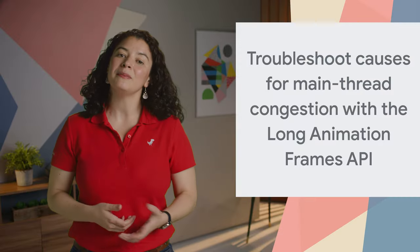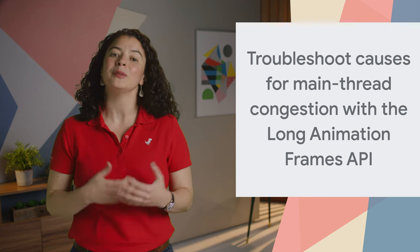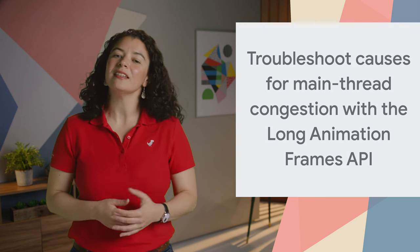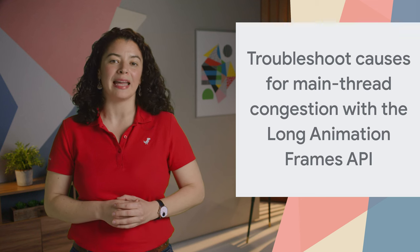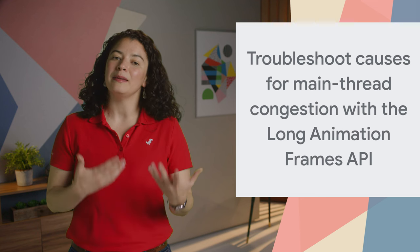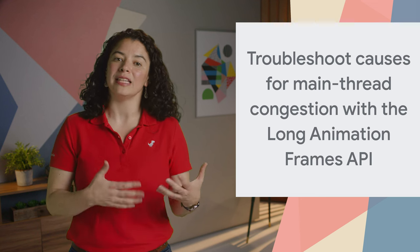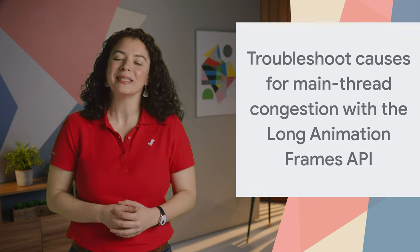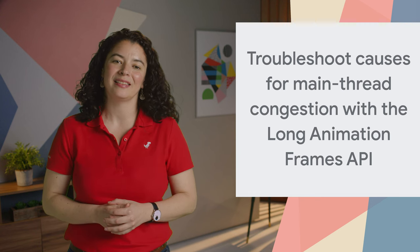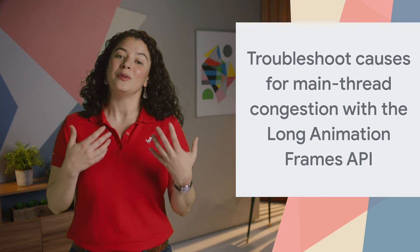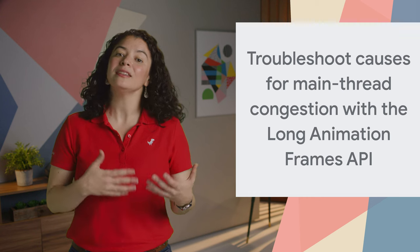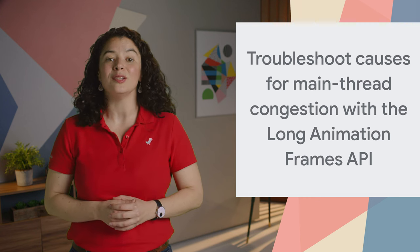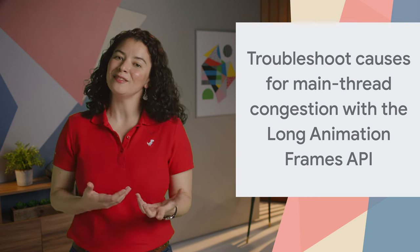The Long Animation Frames API is available to help you find the causes for main thread congestion, which is often the cause for bad INP. INP stands for Interaction to Next Paint, a vital metric that measures a website's responsiveness. The new API is an update to the Long Tasks API to provide a better understanding of slow user interface updates.